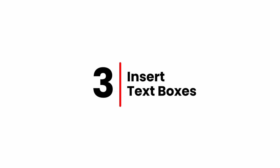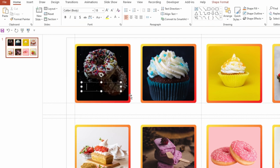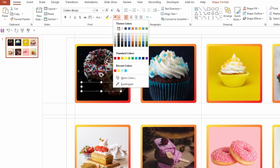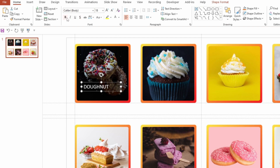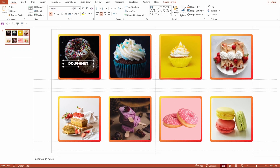Let's insert the text boxes on top of the images. Go to Insert > Shapes and select Text Box. Place the text box on top of the image and type the image name. Play with the font formatting until you get the desired output. Select the text box and press Ctrl+D to duplicate it, place it over the next image, and edit the name.